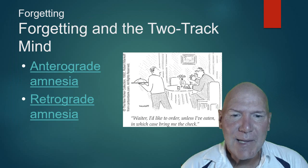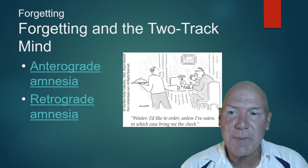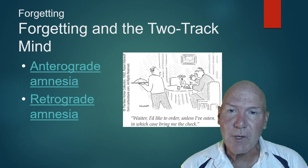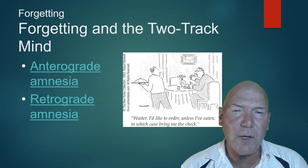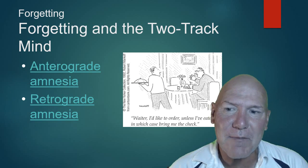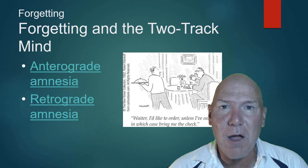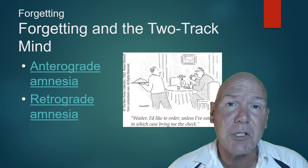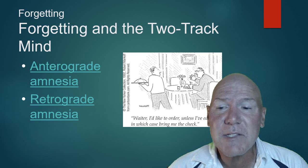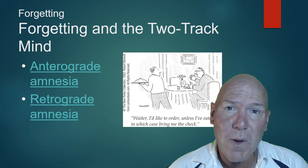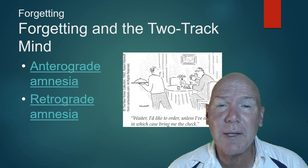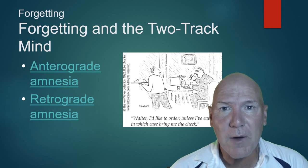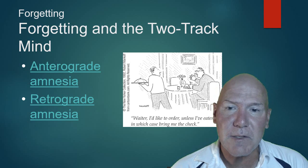When you forget something it's called amnesia. We have two kinds. In severe cases we have anterograde amnesia — you cannot form memories from that point going forward. Clive Wearing, who we saw the video of in class, has anterograde amnesia. He also has retrograde amnesia, which means all memories from the past are gone. So anterograde: you retain the past but can't form new memories. Retrograde: you forget the past but can form new memories.